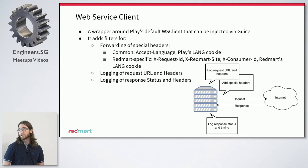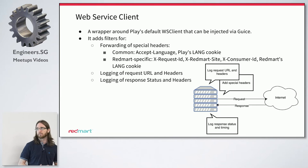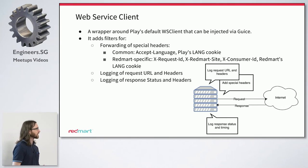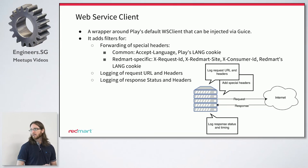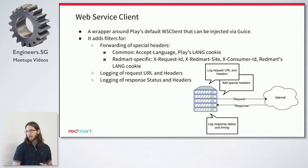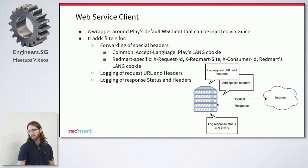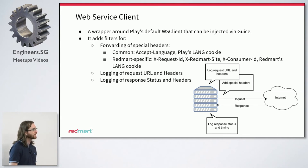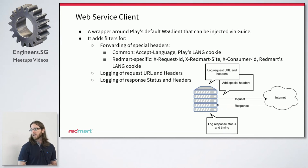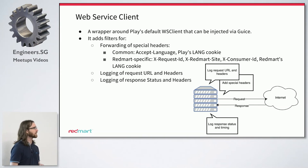We also have a web service client that we use to make external or internal network calls. This was originally built as a wrapper around Play's static web service clients, but over time it grew a life of its own and we added more functionality to it as well. In the diagram here, you can see that whenever it makes a request, the first thing it does is log the request URL and any relevant header information. It also adds some custom headers to every request. Once the response comes back, it logs the HTTP status and how long we were waiting. The X-Request-ID header is related to the request ID we saw on the logging slide, and that's necessary so that logging is uniform across all of our services.